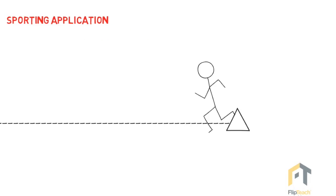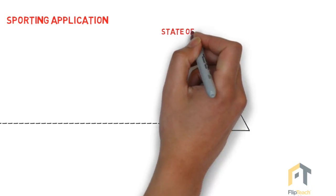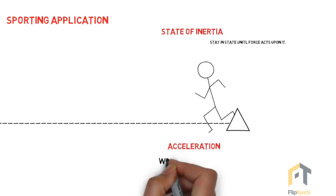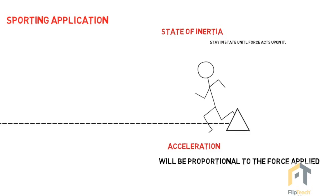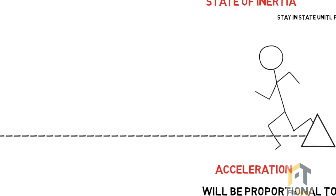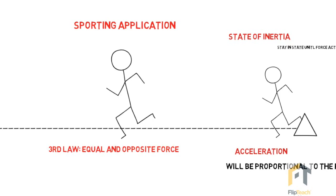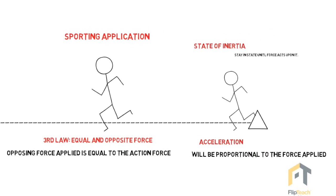Let's look at Newton's laws applied to a sporting situation — a sprinter on the blocks ready to start. First, the law of inertia: the person is in a state of inertia, their body is at rest until another force acts upon it. Second, the law of acceleration: the acceleration will be proportional to the force applied, so the greater the force pushed into the blocks, the greater the acceleration. Third, the greater the force applied to the blocks, the greater the resultant reaction force — the equal and opposite force applied back. That gives you each of Newton's three laws applied to a sporting example, which is important for your exam questions.